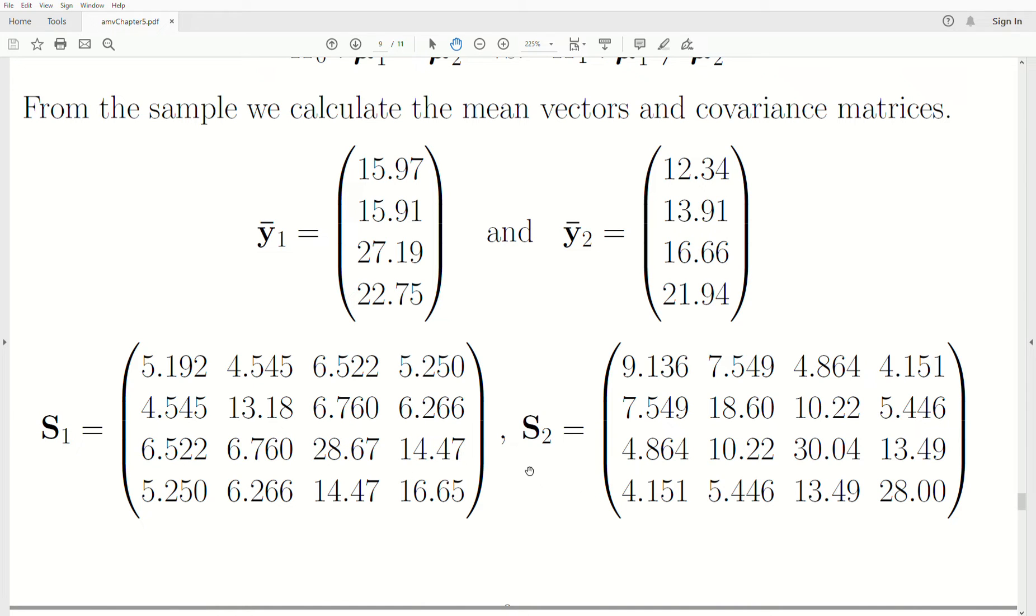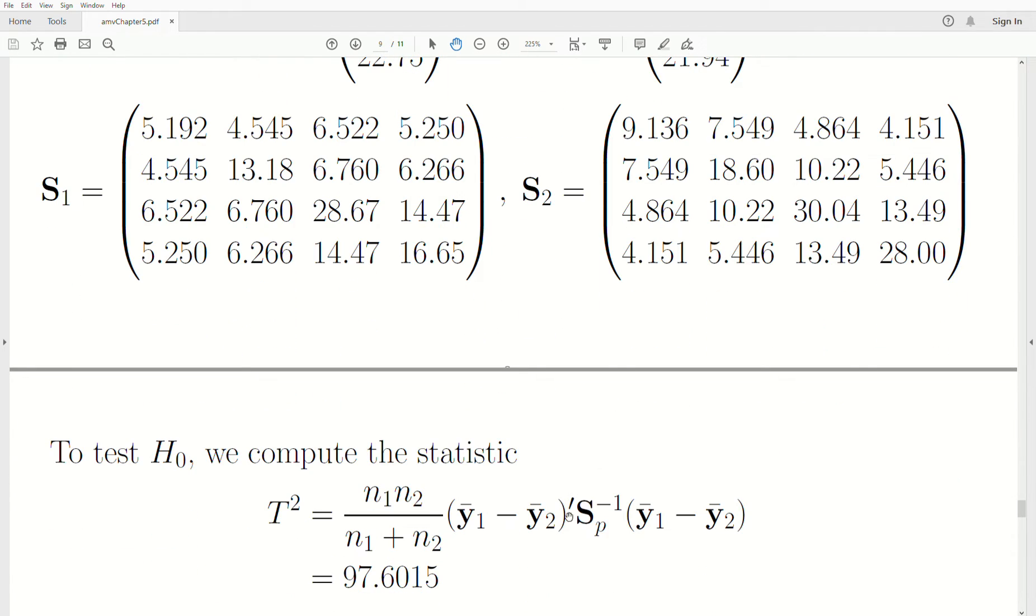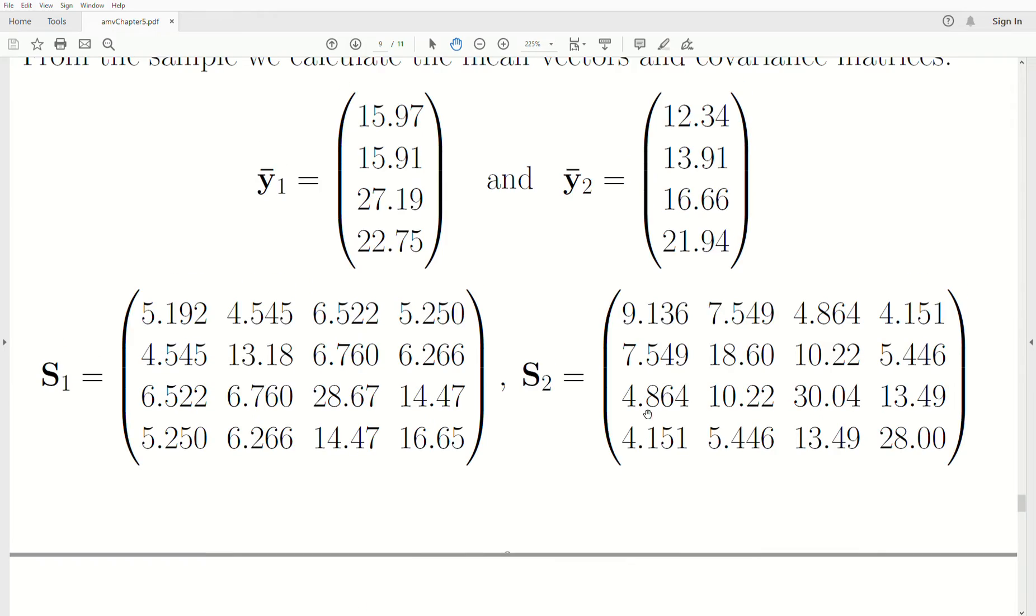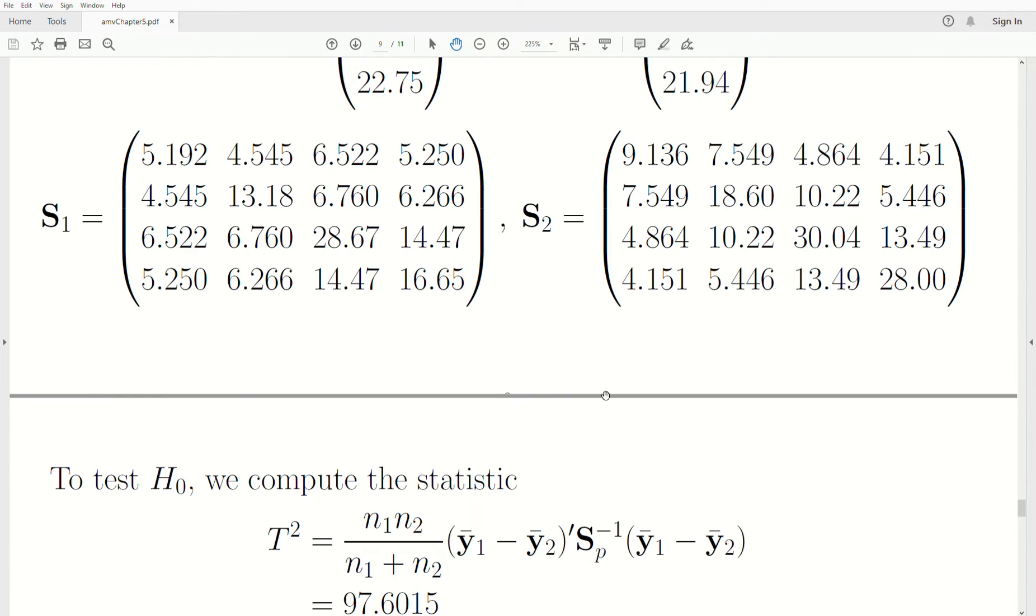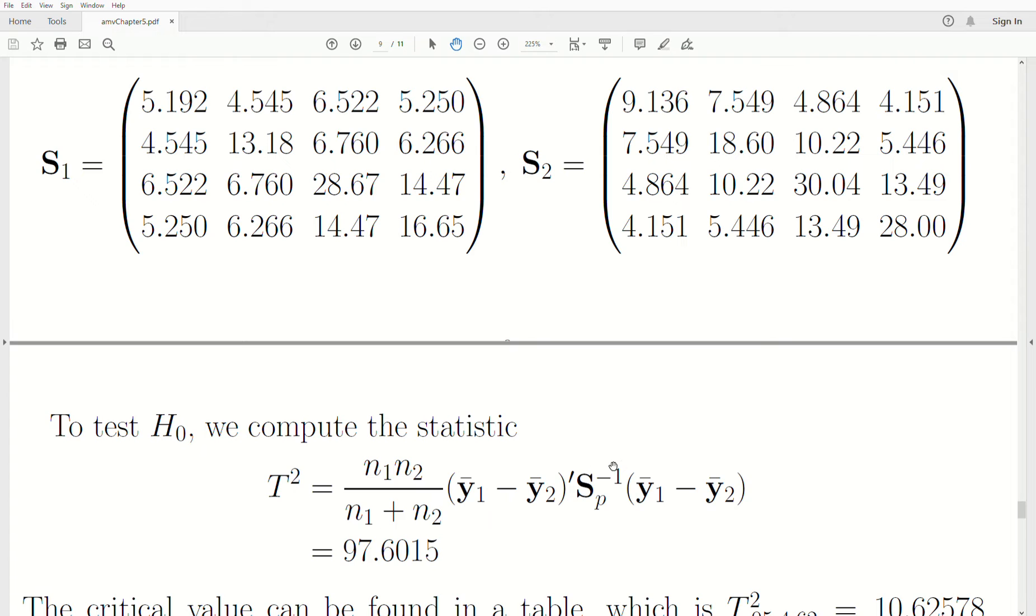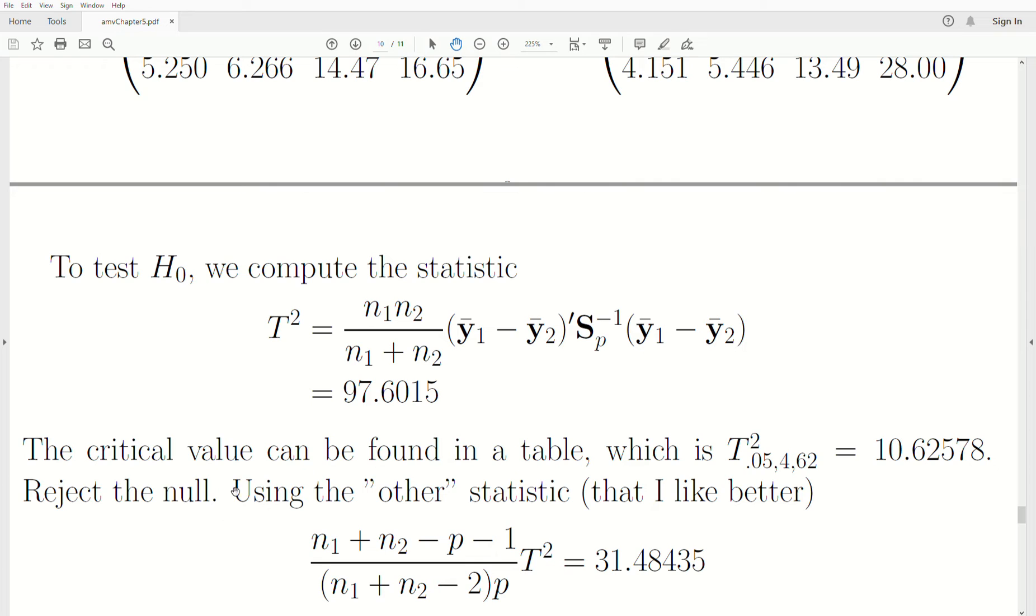To do Hotelling's t-squared, we need that pooled estimate. I just got tired of typing numbers, so I'll show it in the R illustration. This Hotelling's two-sample t-squared is 97.6. The critical value can be found in the table, which is 10.6. So we reject, the test statistic is way bigger than the cutoff value.